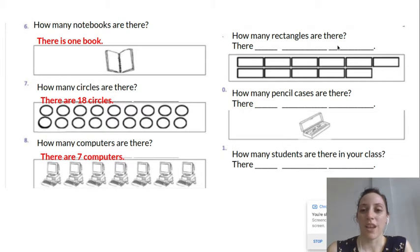How many rectangles are there? One, two, three, four, five, six, seven, eight, nine, 10, 11. There are 11 rectangles.